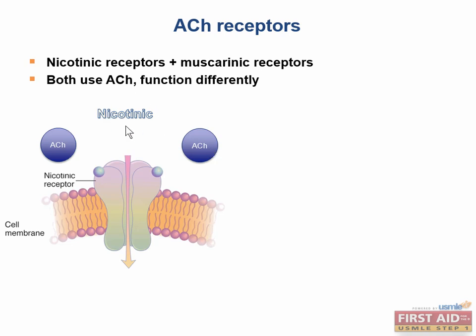How do nicotinic receptors work? Nicotinic receptors are ligand-gated sodium-potassium channels that open when acetylcholine binds. Notice how we have a phospholipid bilayer here — this is our cell — and within this phospholipid bilayer we have a transmembrane protein. This is our nicotinic receptor. This side of the cell is the intracellular side, and this is the extracellular side.